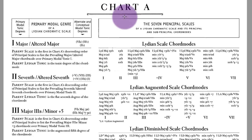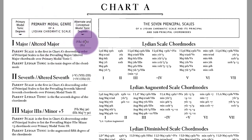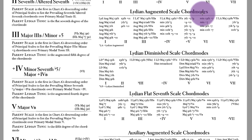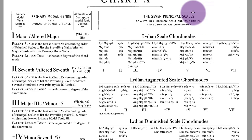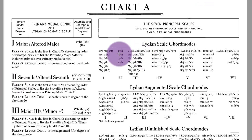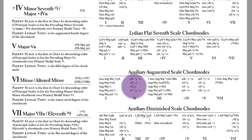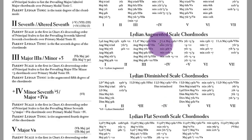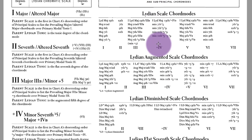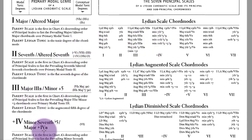Going through Chart A: the primary modal genres are shown here. Genre one relates to major and altered major chords — if you look down all the mode-one entries, you get some kind of major chord. Looking down the two chords, you get some kind of seventh chords or extensions. Then three chords, four chords, short four chords. You can see the same genres appearing in each vertical scale.